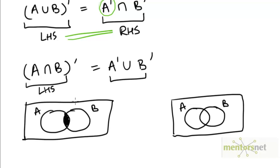Let's see if we get the same shading looking at the set on the right hand side. A complement is the region outside of the circle representing A. As we saw in the previous proof, this region can be divided into two sub-regions: region 1 which is outside of both A and B, and region 2 which is this crescent-shaped region inside of B but excluding the overlap with A. So regions 1 and 2 represent A complement.